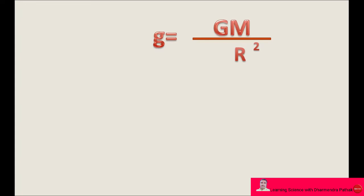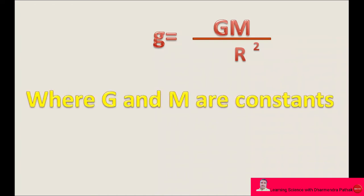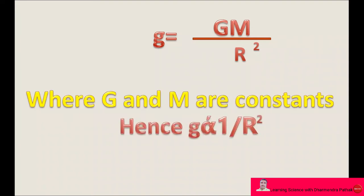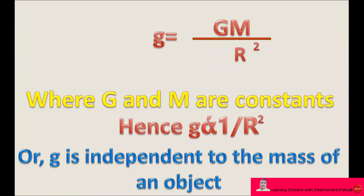Hence, g is equal to G capital M upon R square, where G is the universal gravitational constant and M is the mass of the earth, both of which are constant. Hence, g is inversely proportional to the square of the radius, and acceleration due to gravity is independent of the mass of an object.